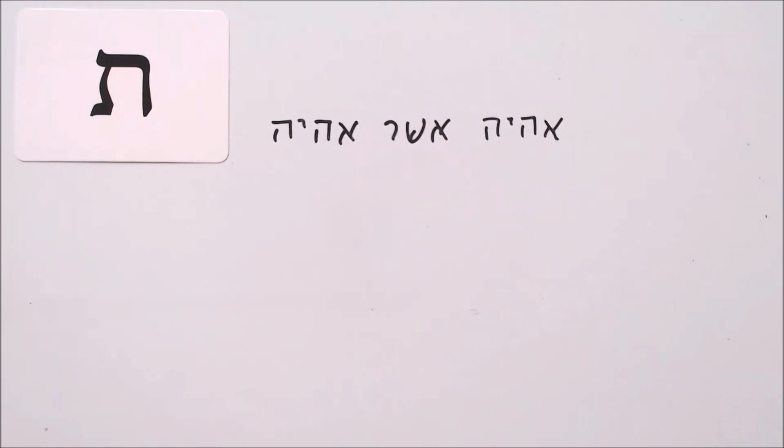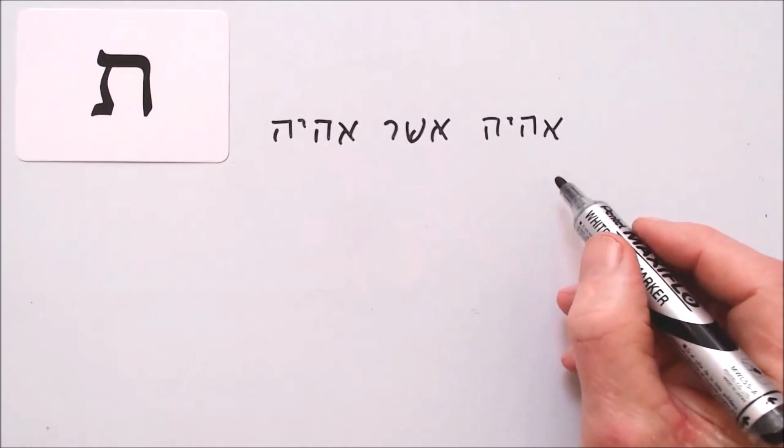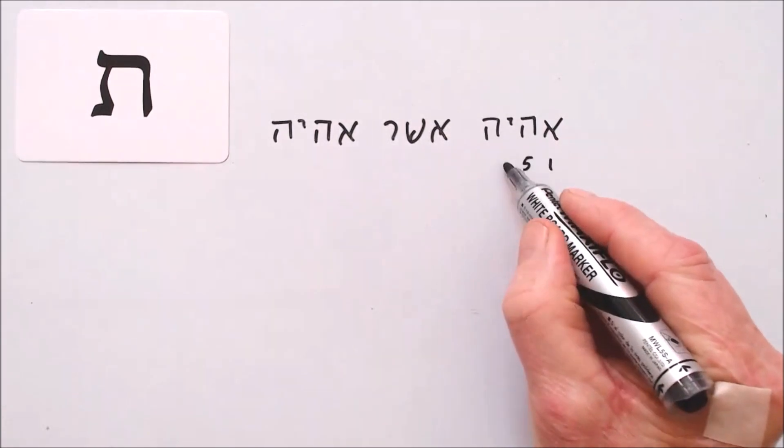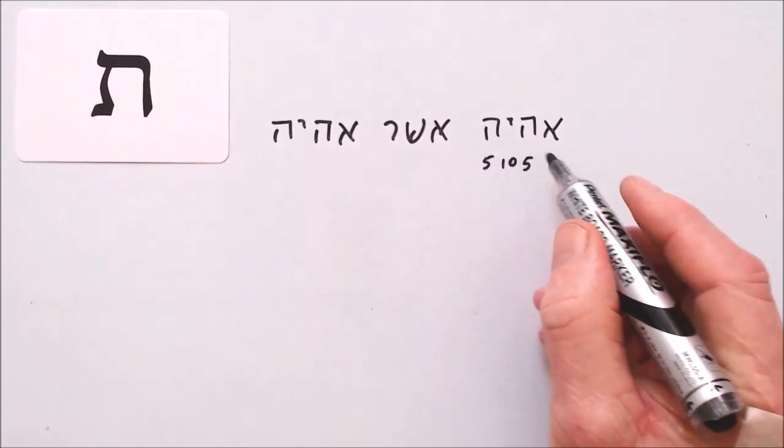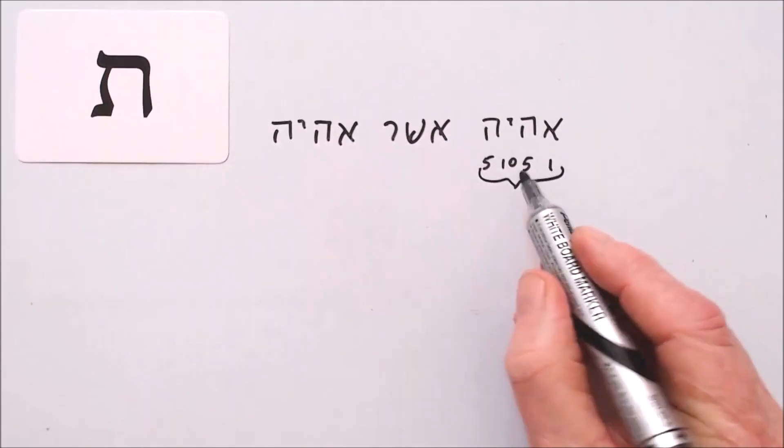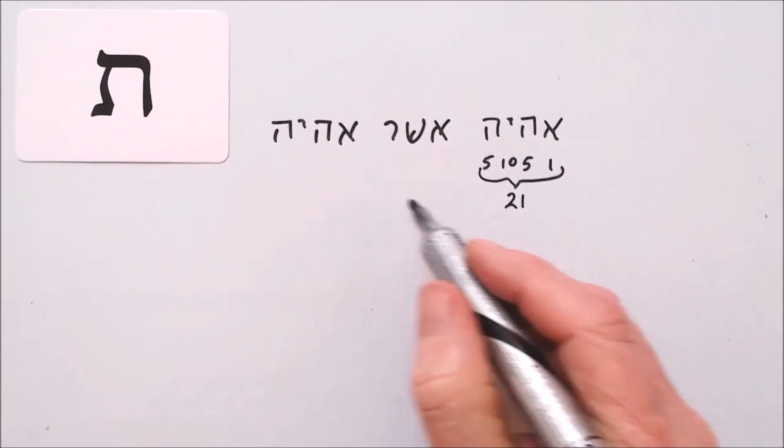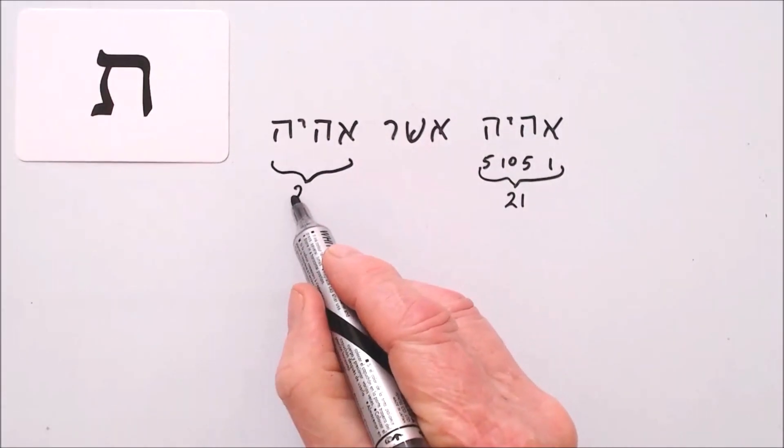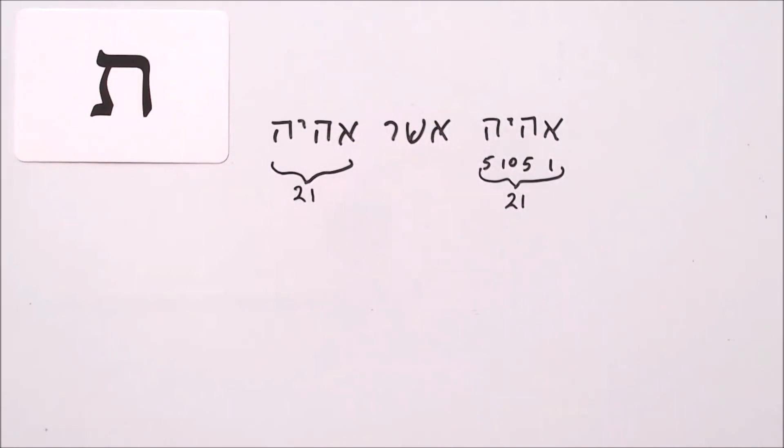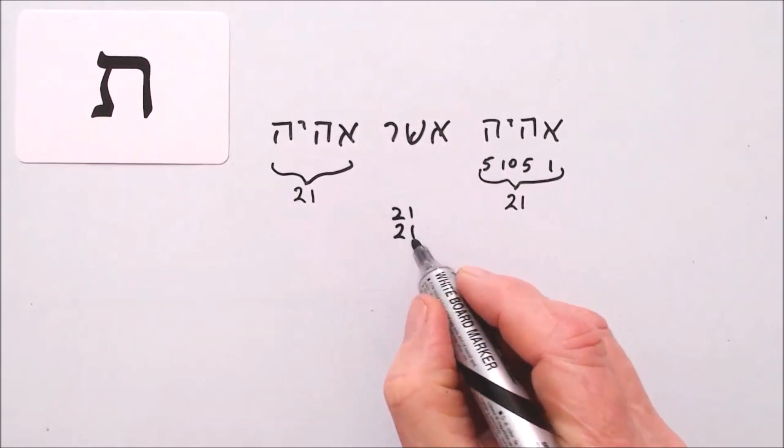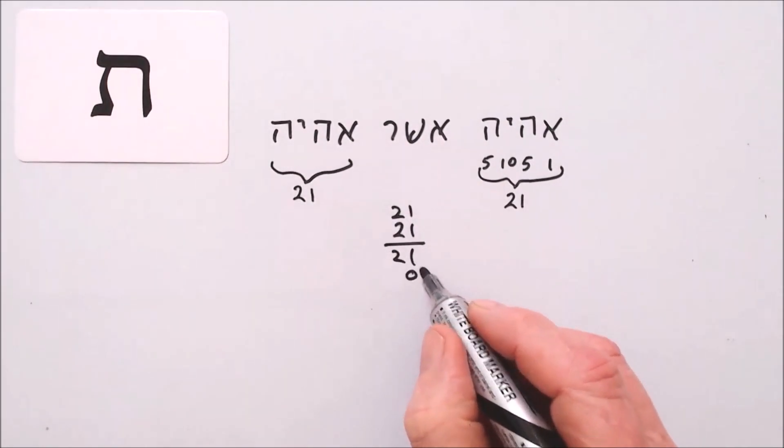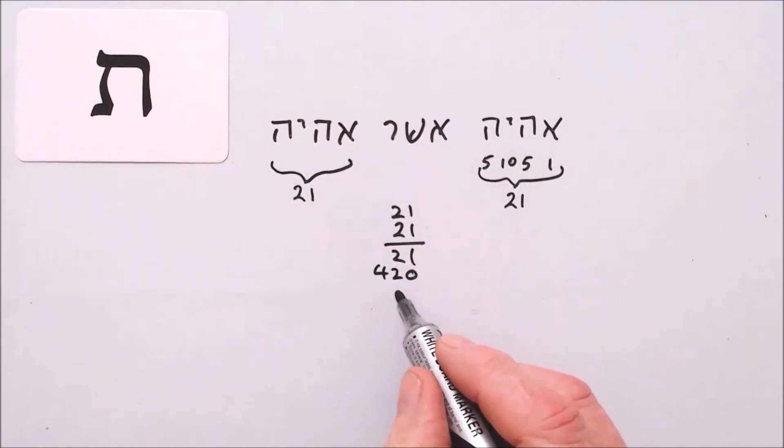And now for the hidden message in the numerics. The Aleph is one, the Hay is five, the Yud is ten, and the Hay is five. This amounts to five plus ten is fifteen, plus five is twenty, plus one is twenty-one. Which means that's twenty-one also, this is just a repetition of it. So we've got two twenty-ones. Now if we multiply these two twenty-ones together, twenty-one times twenty-one: once one is one, once two is two, put down a zero, once two is two, two twos is four, four forty-one.